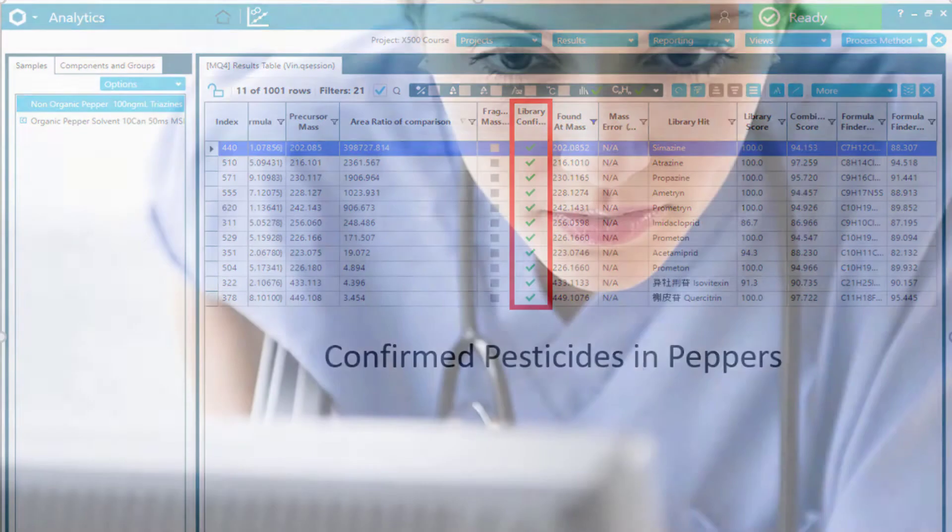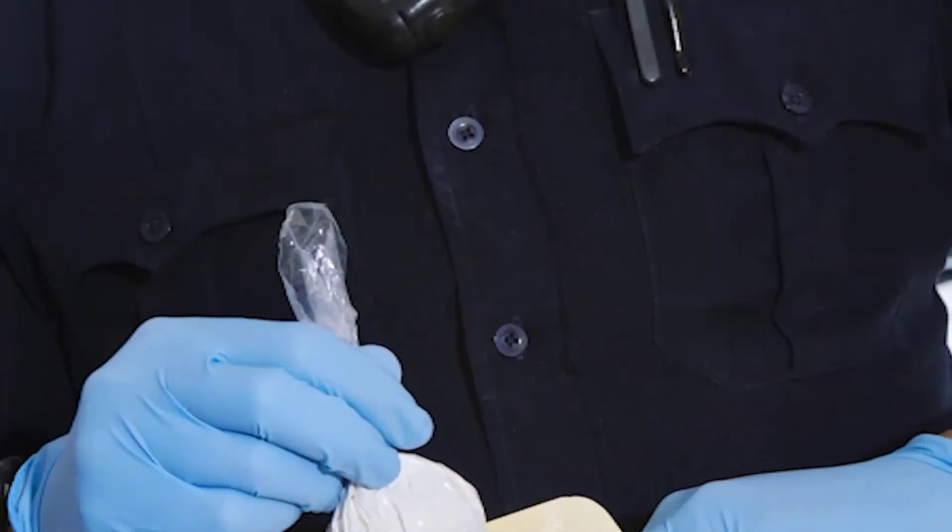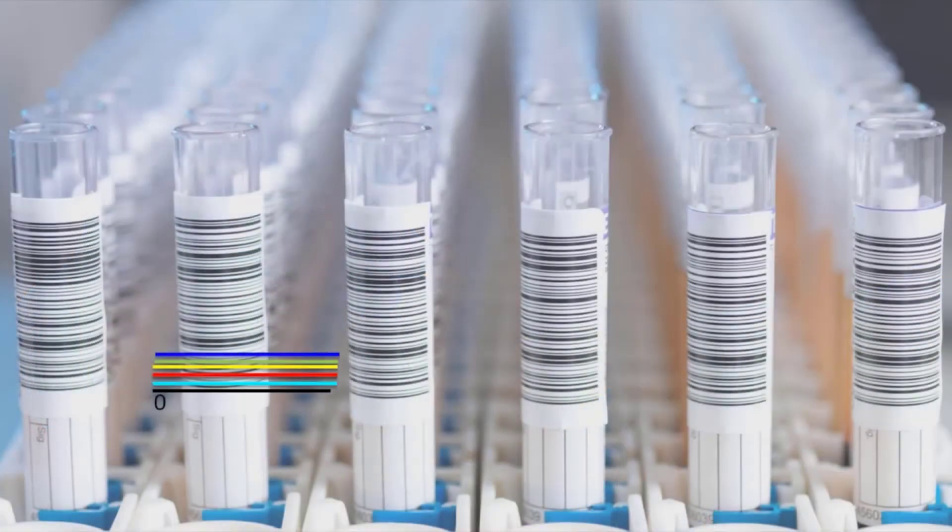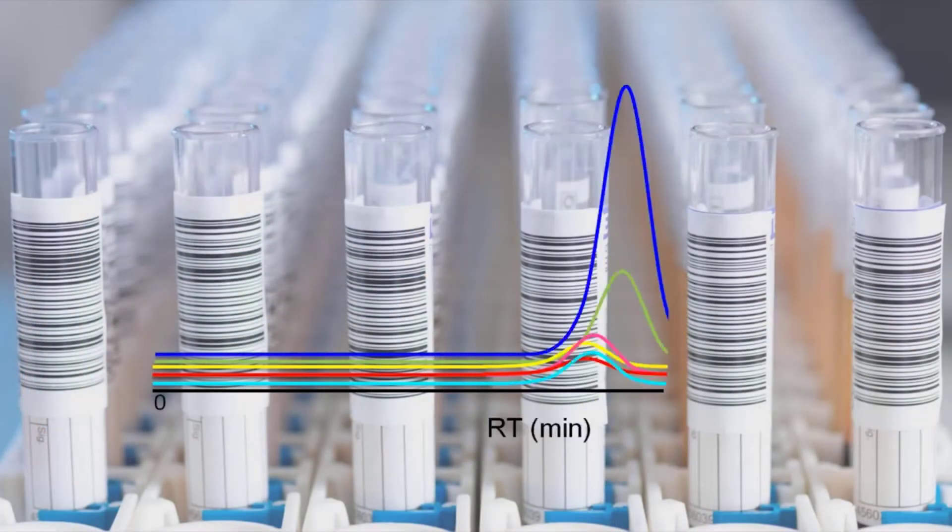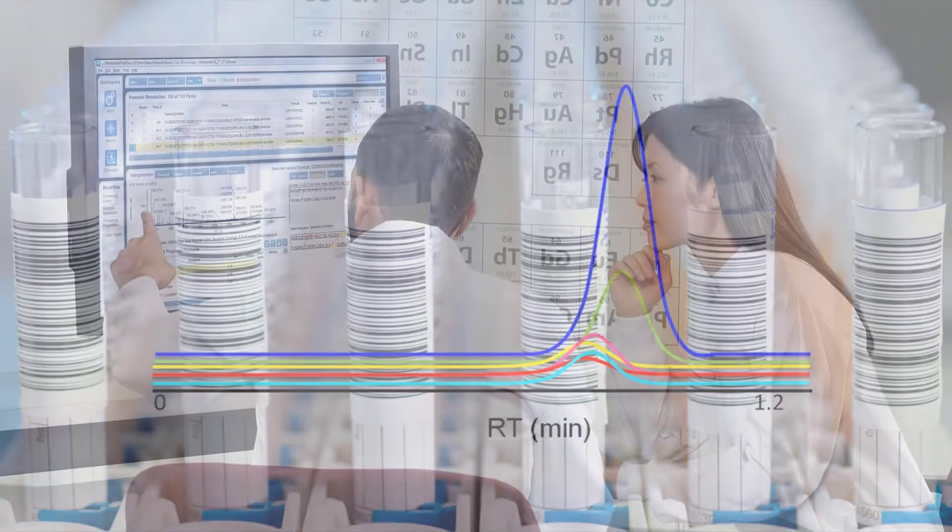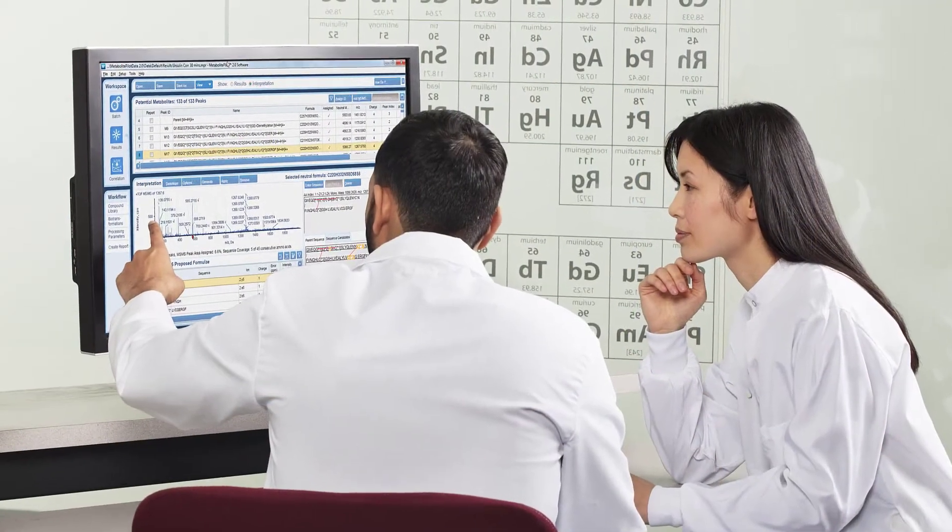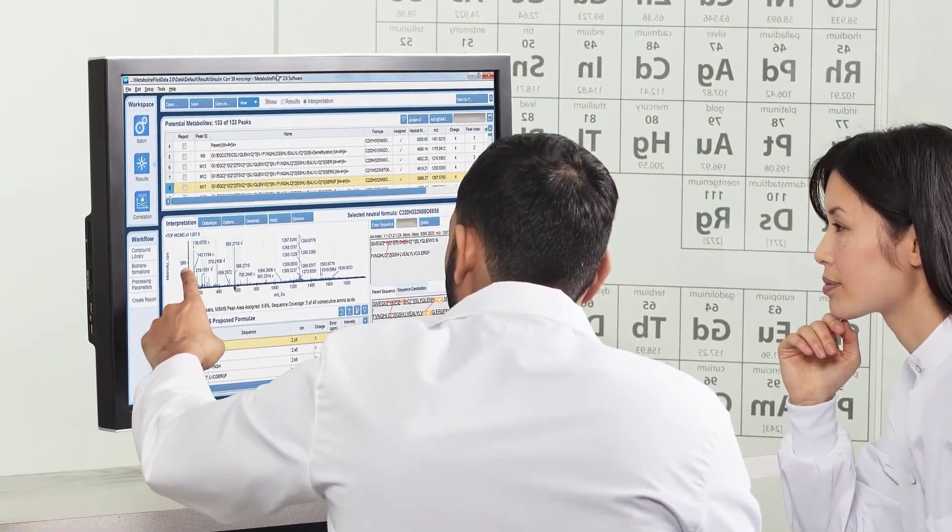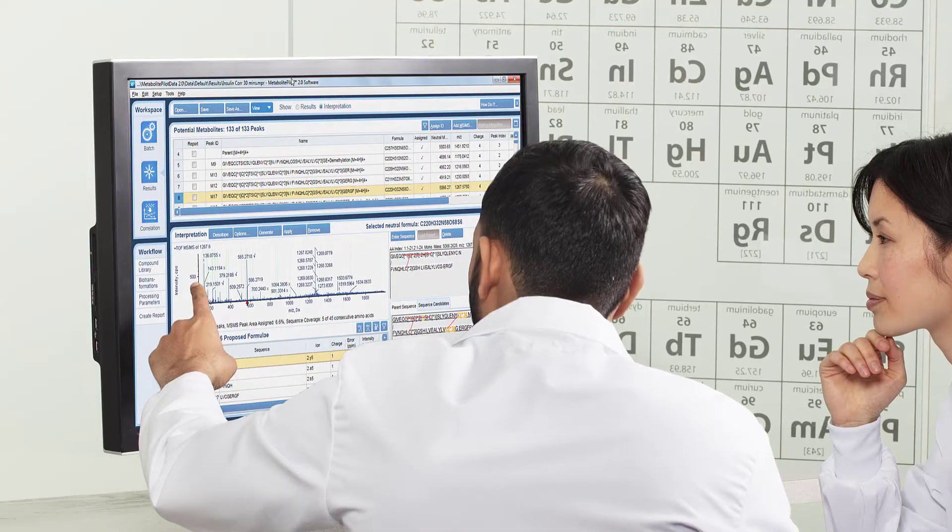Mass spec is quickly being adopted in the fields of clinical research and forensics. It is the increased speed, accuracy, and selectivity that reduces false positive results and makes mass spec a more desirable choice than traditional methods such as immunoassays.